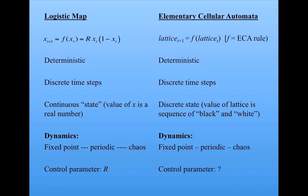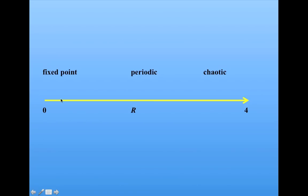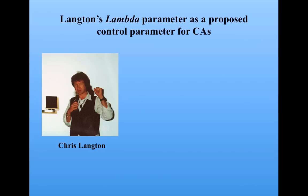People started thinking about what would be a control parameter that would play the same role as R, where as you increase the value of the parameter, you go through these different kinds of dynamic behaviors. Chris Langton is a complex system scientist who worked on cellular automata extensively and came up with this idea called the lambda parameter as a proposed control parameter for cellular automata.